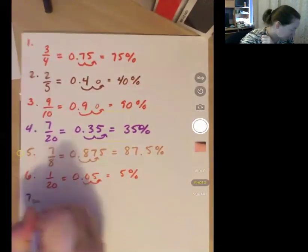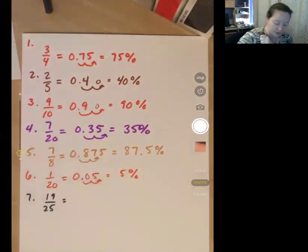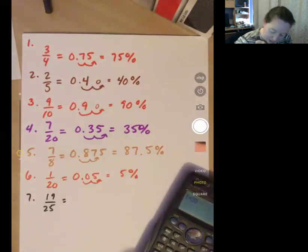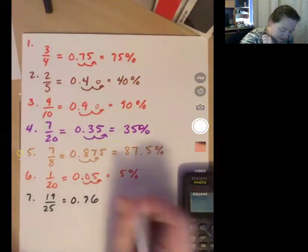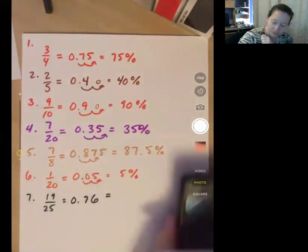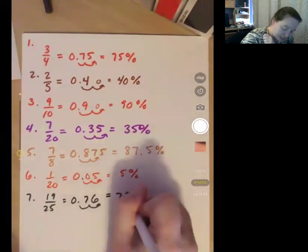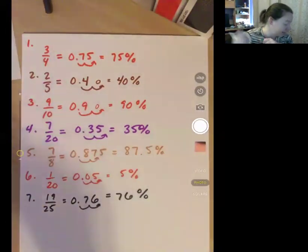Number seven, 19 over 25. I know how to do this one in my head, I just don't feel like trying to do 19 times 4 as mental math. I move it over two times as always and end up with 76%.